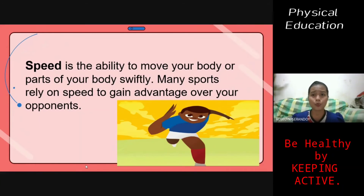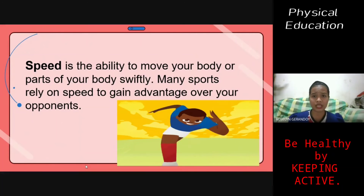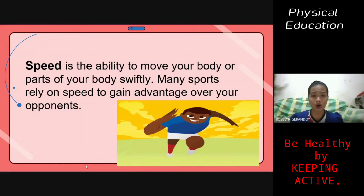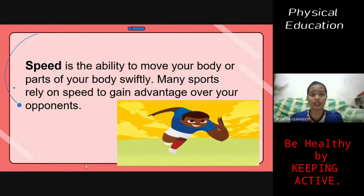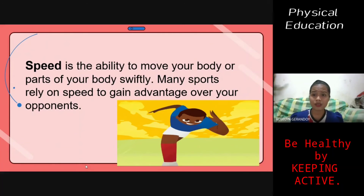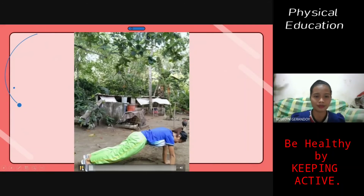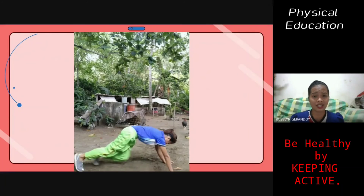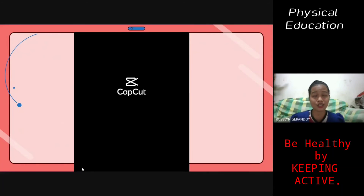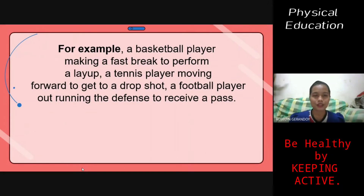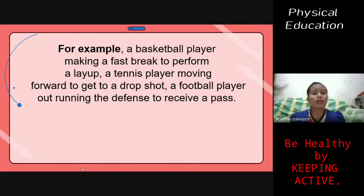Speed is the ability to move your body or parts of your body swiftly. Many sports rely on speed to gain advantage over your opponent. Examples include a basketball player making a fast break to perform a layup, a tennis player moving forward to get a drop shot, and a football player outrunning the defense to receive a pass. You use your speed in order to perform such activities.